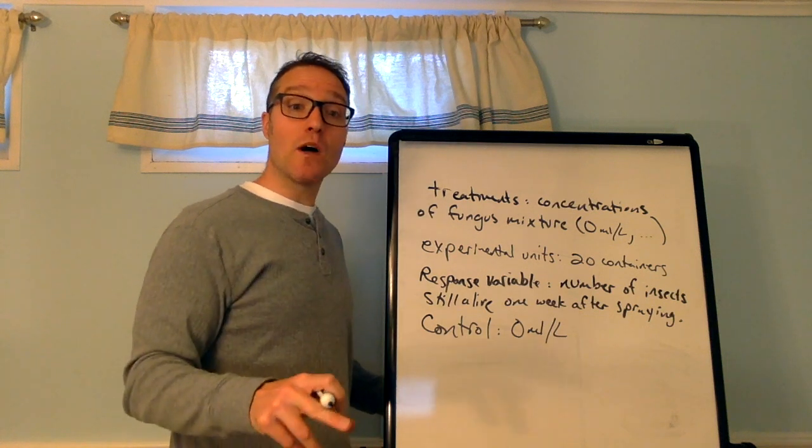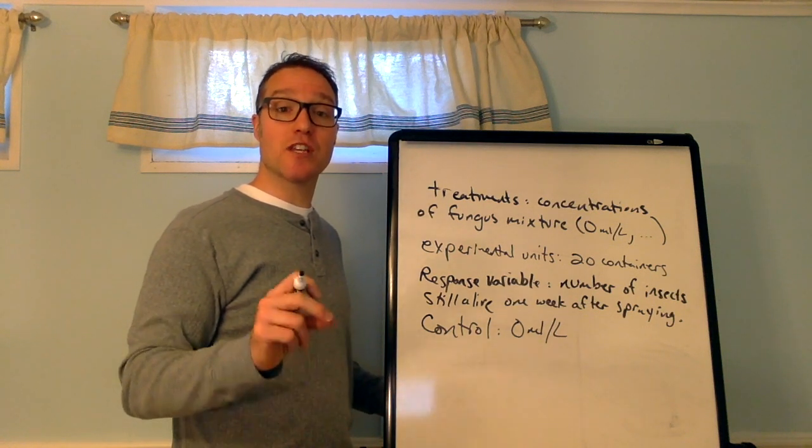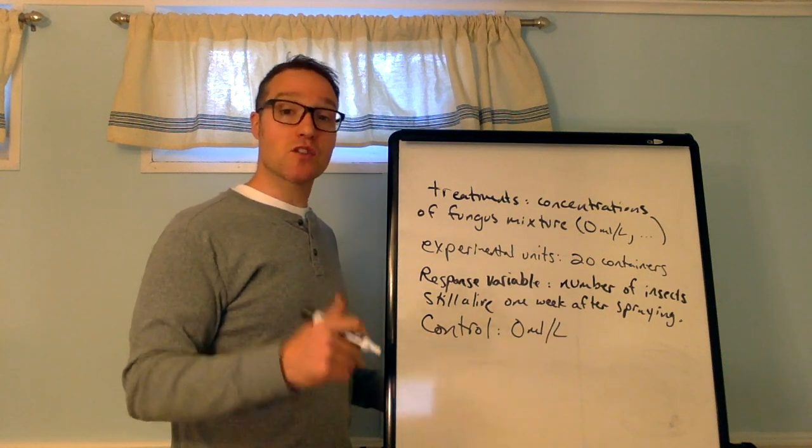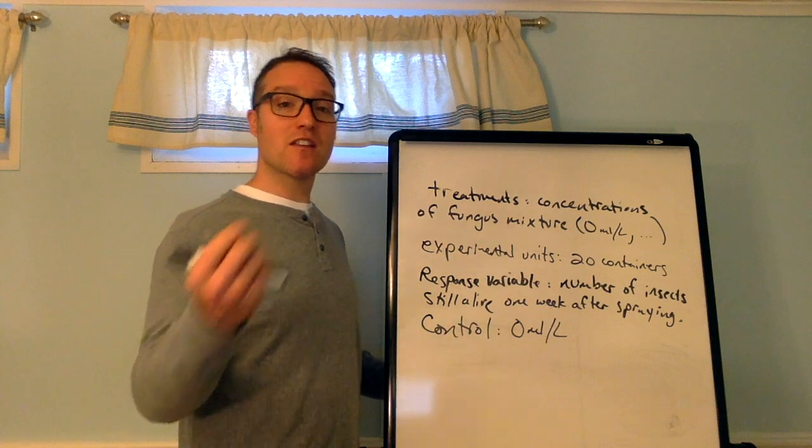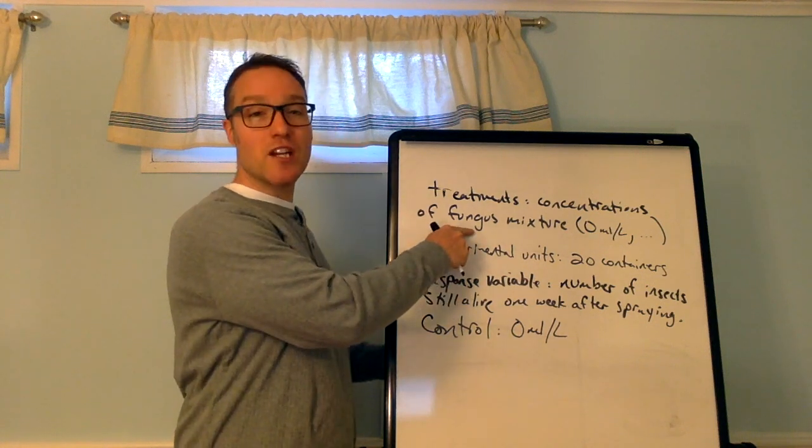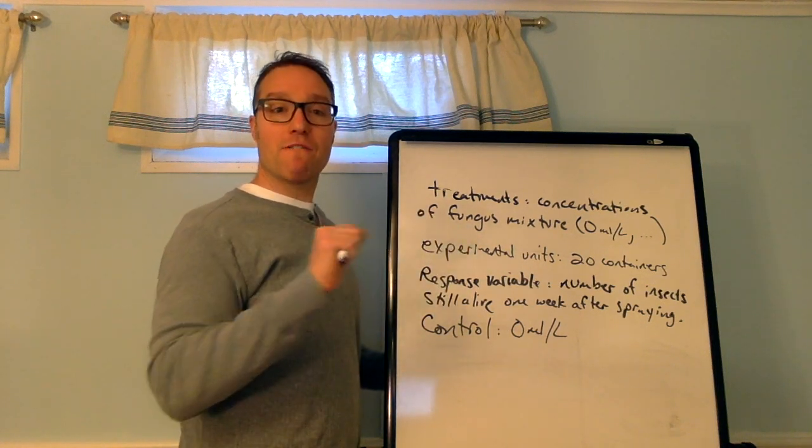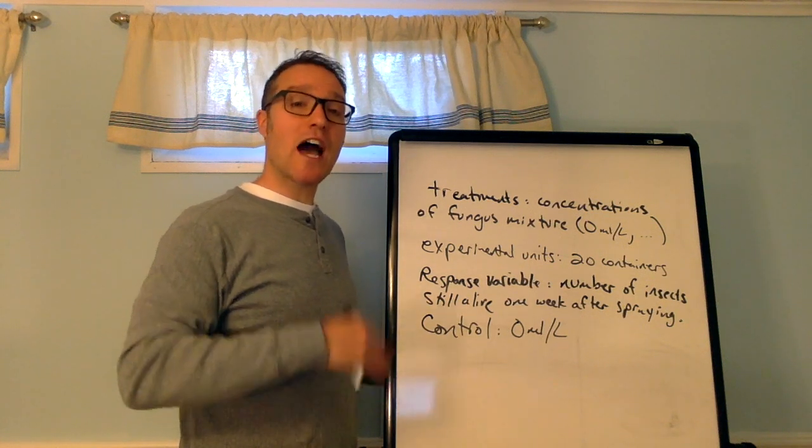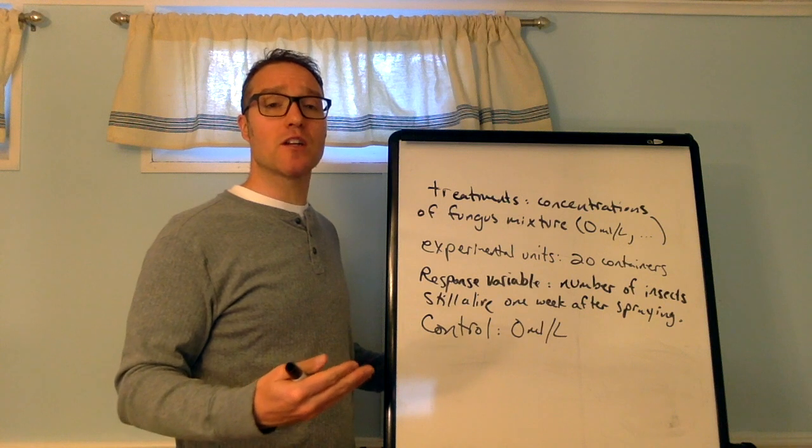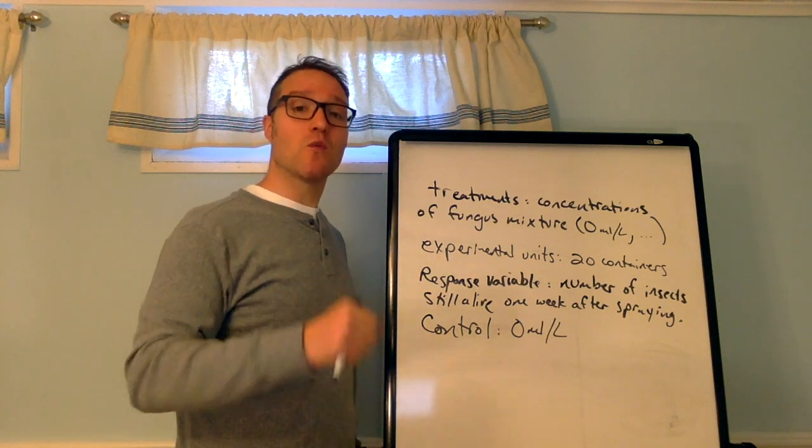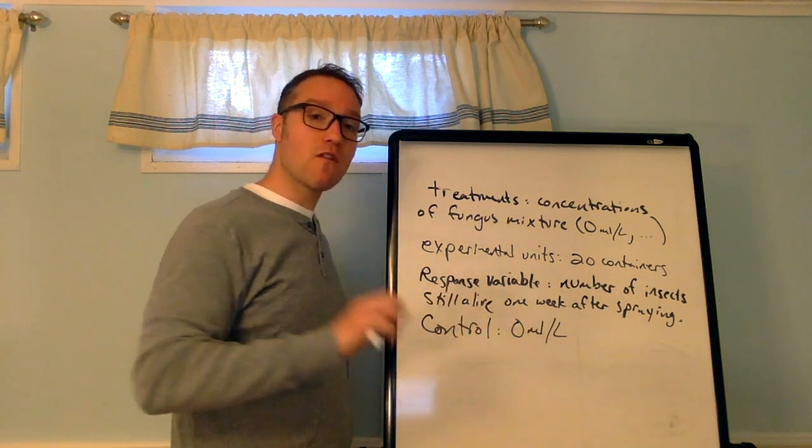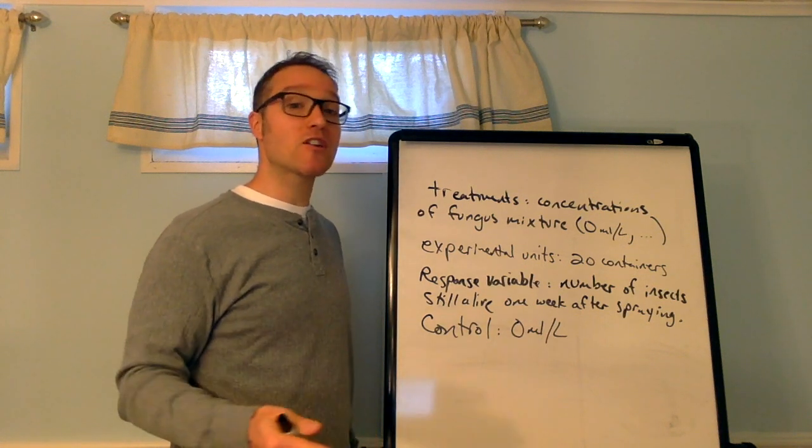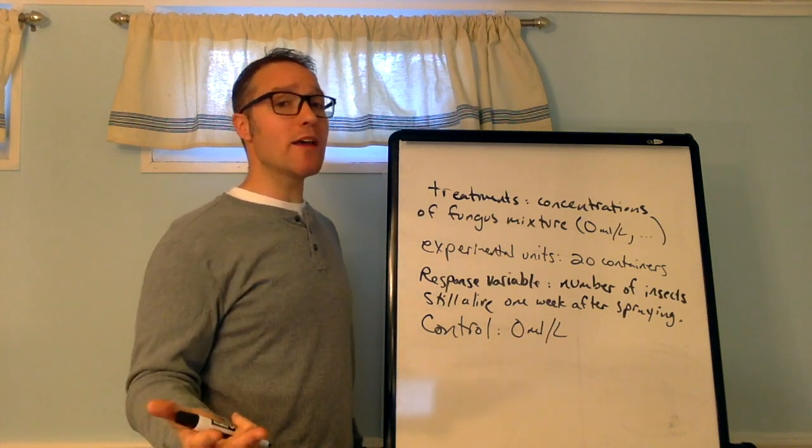Part C wants us to describe how the treatments can be randomly assigned to the experimental units so that each treatment has the same number of units. So, there were 20 containers. There are four concentrations. So, five containers are going to get each level of those treatments, right? So, how do we do the random assignment? That's what they want to know. So, you can't just say what I just said, which is five are going to get zero. Five are going to get 1.25. Five are going to get 2.5. How do you actually randomly assign them? So, there's a couple ways to explain this.